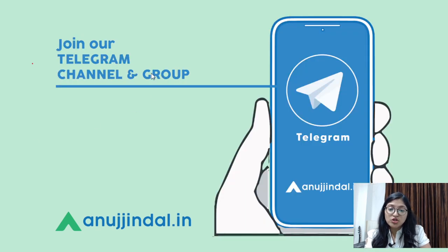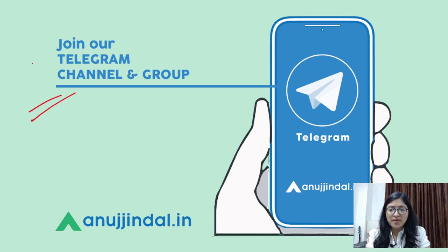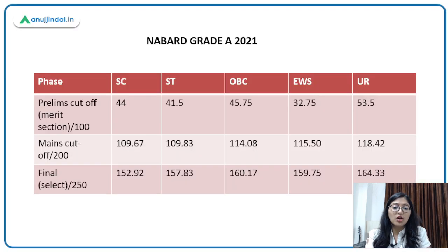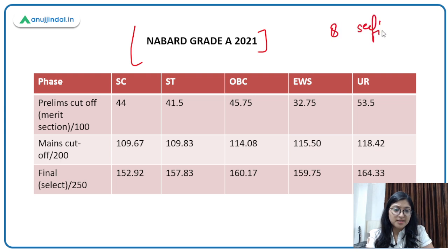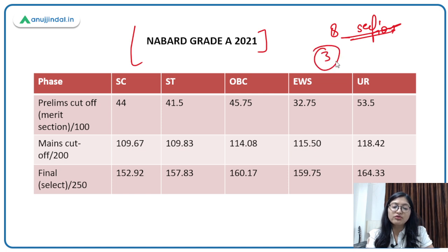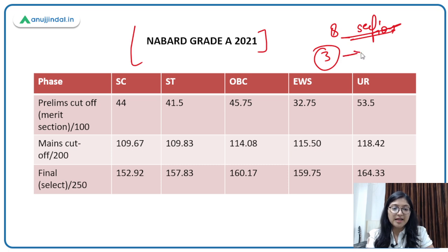You can also join our Telegram group to get all updates related to upcoming videos, exams, and notifications. Now looking into the cutoff for this year's NABARD Grade A Examination — starting with Prelims. As you know, there are 8 sections, of which 3 sections are chosen for the merit. The rest are qualifying sections. ESI, ARD, and General Awareness are counted in the merit, so the merit is made on these 3 sections.